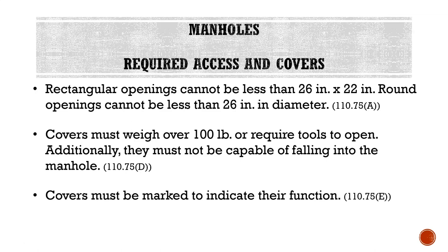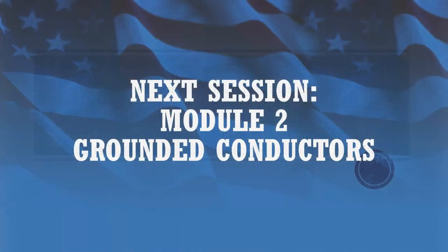Covers must be marked to indicate their function — so you don't just have a random cover at grade with no indication of what it is. It has to indicate 'electrical manhole' or something to that effect. That wraps up this lecture covering parts four and five of article 110, and also our last lecture for module one. Our next lecture will be the start of module two, looking at grounding conductors.